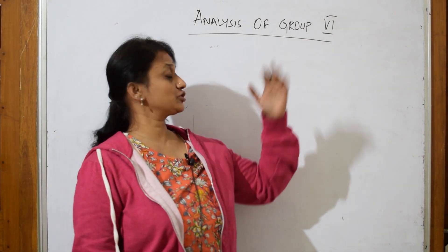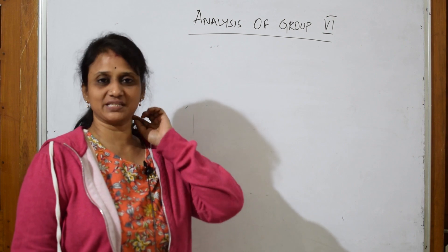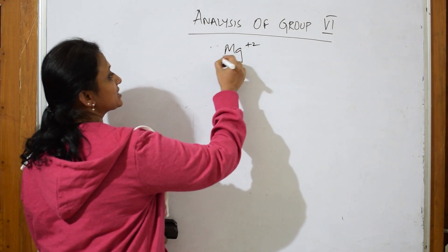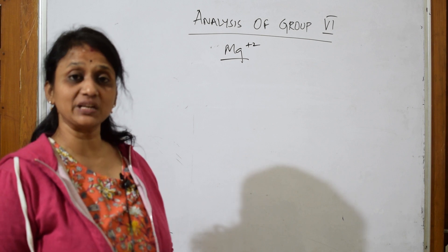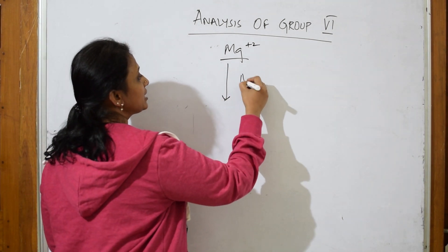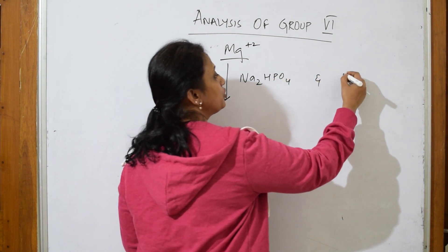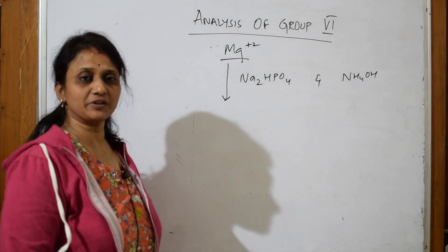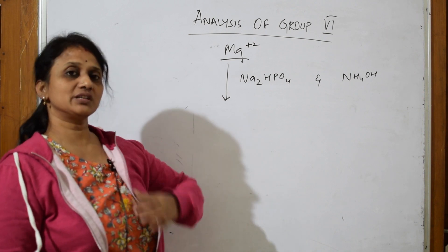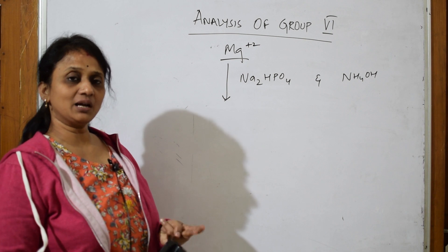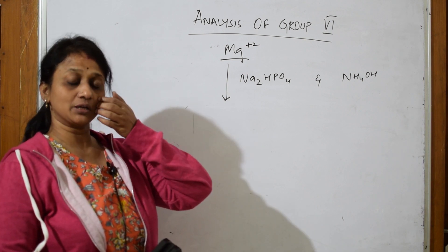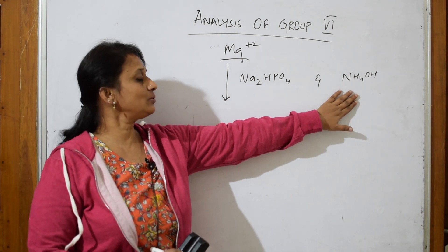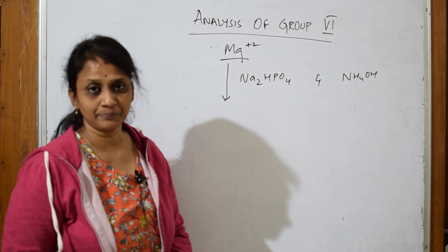Welcome back. Now let's finish Group 6 analysis of basic radicals. The cation in Group 6 is magnesium — the simplest test. The group reagents are sodium hydrogen phosphate (Na₂HPO₄) and ammonium hydroxide. Take the filtrate left from Group 5, add ammonium oxalate to separate everything out, then take the remaining filtrate and add excess ammonium hydroxide followed by sodium hydrogen phosphate.